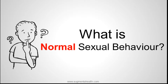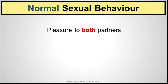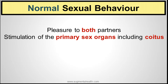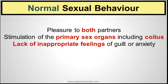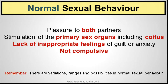The important features of normal sexual activity are: pleasure to both partners involved in the sexual activity, stimulation of the primary sex organs including coitus, lack of inappropriate feelings of guilt or anxiety, and the whole sexual activity being not compulsive in nature. These are some of the things which make a sexual activity normal.